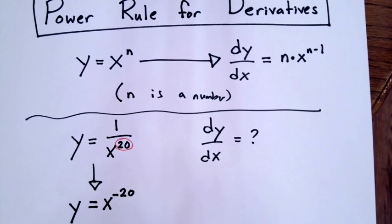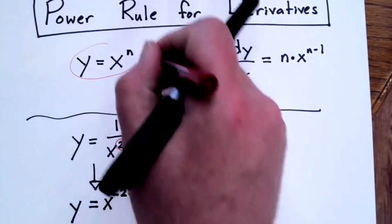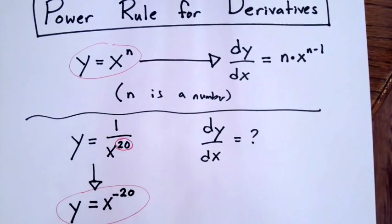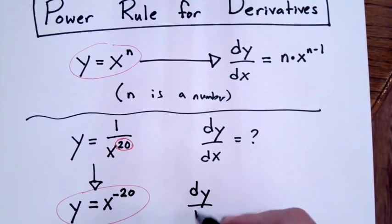Once we rewrite it this way as x raised to the negative 20th power, it matches the power rule pattern perfectly. So now we have dy/dx is equal to